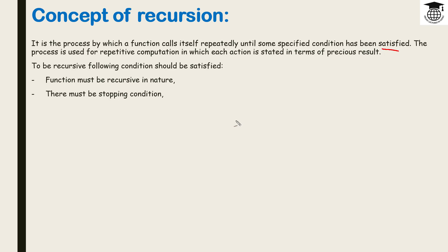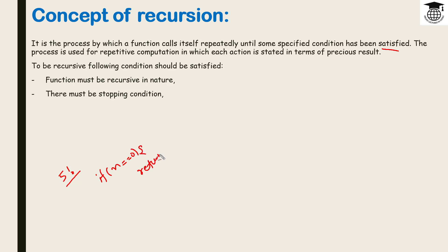If the condition has been satisfied, the function stops calling itself. The function calls itself repeatedly until some specified condition is satisfied. The condition is: if n is equal to 0, then return 0. Otherwise, return n into factorial of n minus 1.